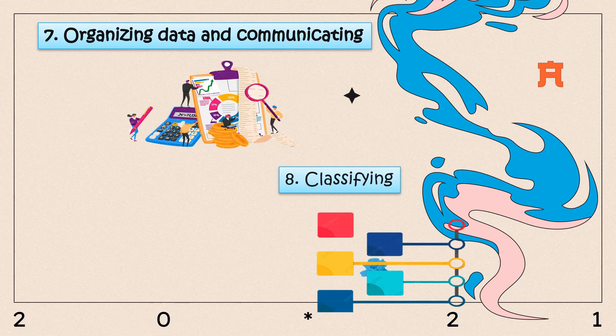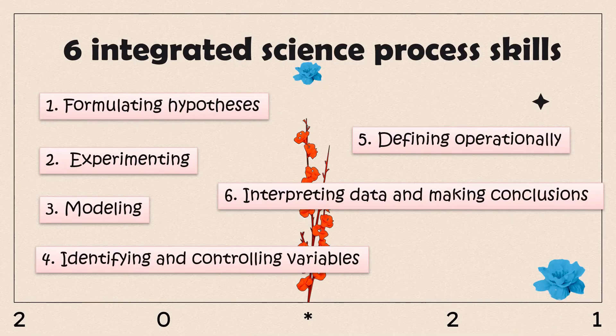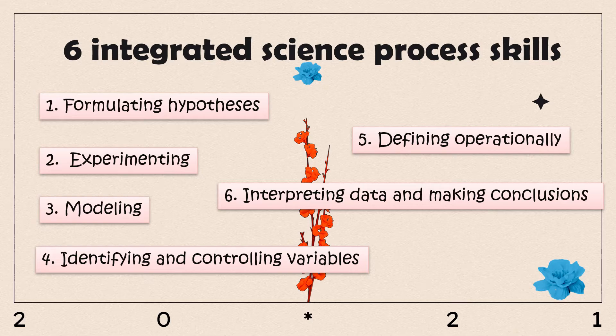Number five: predicting. Number six: observing. Number seven: organizing data and communicating. And last, number eight: classifying.